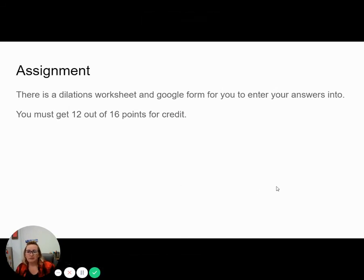Okay, so hopefully you're feeling really confident about dilations. I feel like it's kind of the easiest once you get your head around it. So we do have a dilations worksheet today and a Google form that you're going to enter your answers into. In order for you to get credit for this assignment, you need to get 12 out of 16 correct. Hopefully you're going to get more than that, but at least 12 to be able to get credit. You will be able to go back and make edits and resubmit to get to your 16 points.